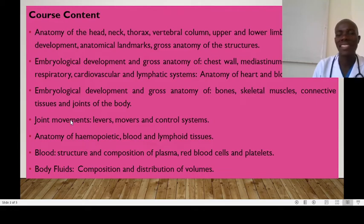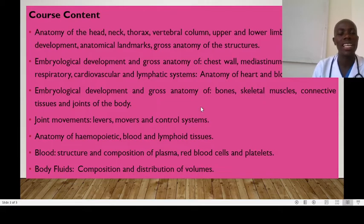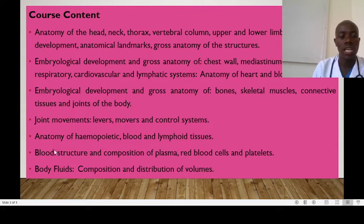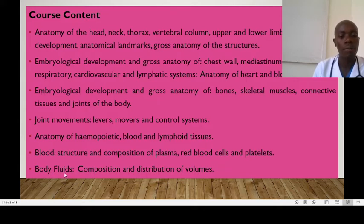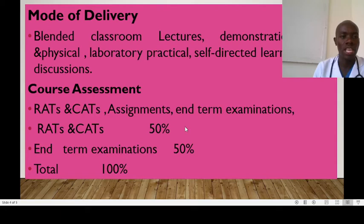We'll also be looking at the types of movements at the joints, types of joints, type levers, the movers, and the control system to understand how the human skeletal system works. We also need to look at the anatomy of the hemopoietic system, outlining the blood and the lymphoid structures. We shall also be looking at blood in detail — its structure, composition of the plasma, red blood cells, platelets, and white blood cells. Lastly, on the course content, we'll be looking at the body fluids, their composition and distribution of volumes, so that we can understand the human body.